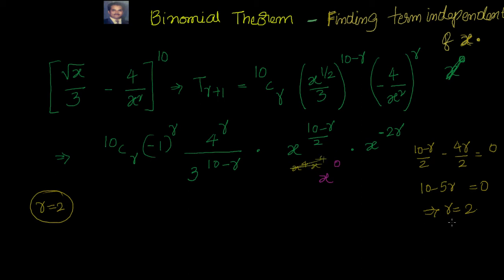So let's find out what is the value of this because that will be the term which we left out. This whole thing will become 1 because it's independent of x. This is the only value which is left out with me which I have to find out. So that is 10C2 minus 1 whole square, 4 to the power of 2 divided by 3 to the power of 8.